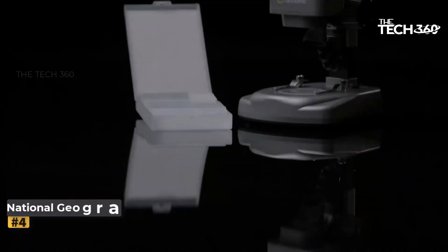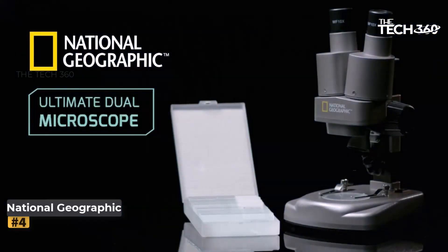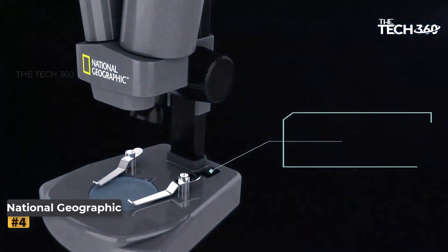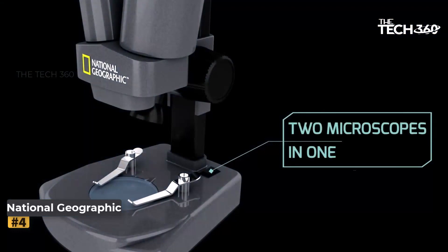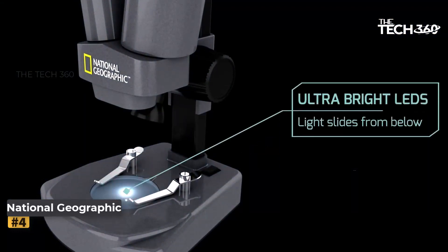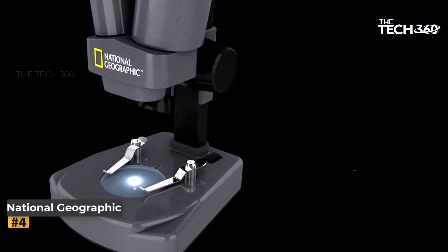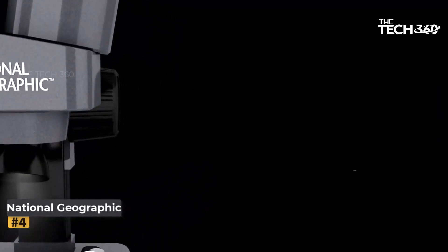Number 4: National Geographic Dual LED Microscope. Designed for young scientists aged 8 to 12, the National Geographic Dual LED Microscope is an engaging and educational option. It comes with 35 ready-prepared slides, allowing children to start exploring immediately.